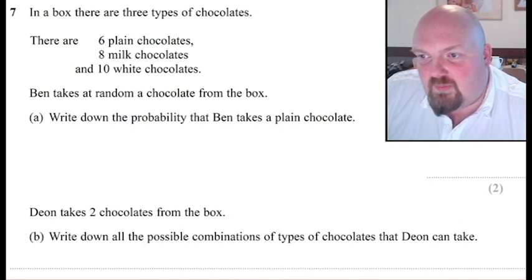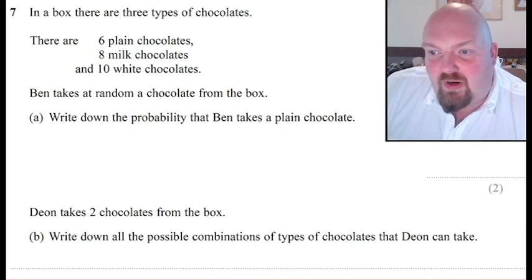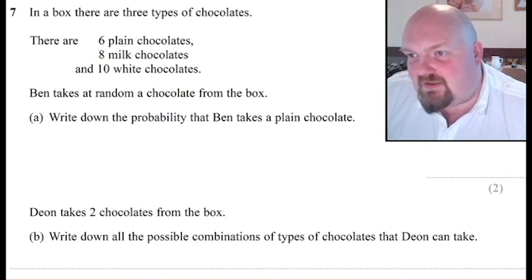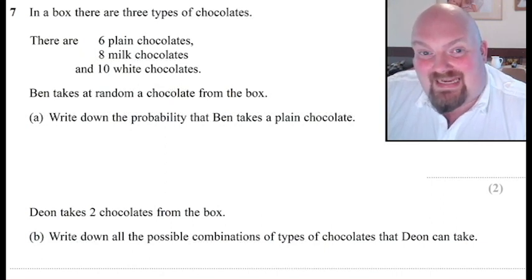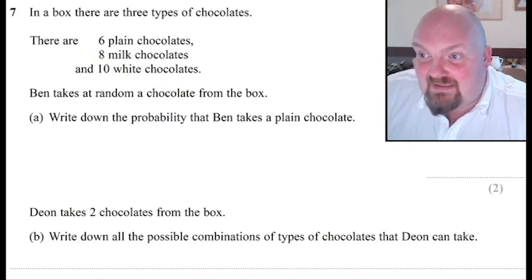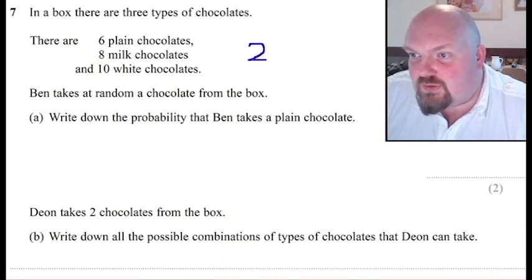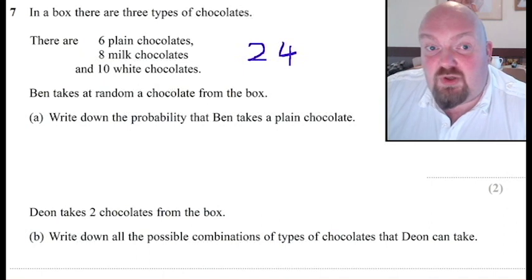Ben takes at random a chocolate from the box. Part A, write down the probability that Ben takes a plain chocolate. Now the first thing I need to do is work out how many chocolates there are all together. So ten add eight, add six. Ten and eight is eighteen. Eighteen add six is twenty-four. So in total there are twenty-four chocolates.